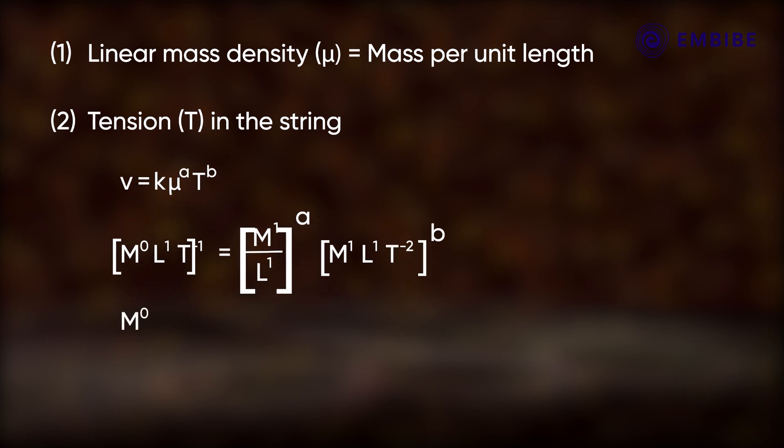M to the power 0, L to the power 1, T to the power minus 1 is equal to M to the power a plus b, L to the power minus a plus b, and T to the power minus 2b.